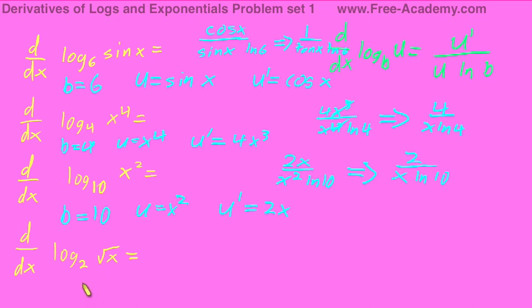And our final problem that we're going to do for this set here is going to be the derivative of log base 2 of square root of x. Our base equals 2. Our function equals the square root of x, or x to the 1 half. And our derivative is going to be 1 over 2 root x. And now we just plug and chug.